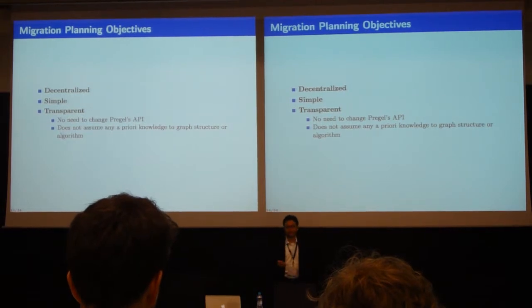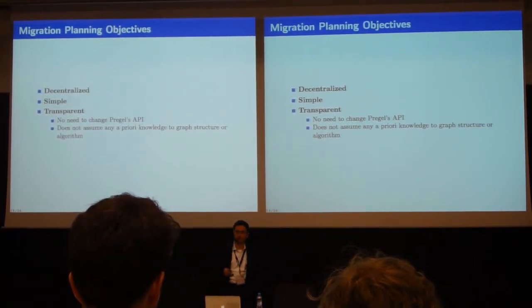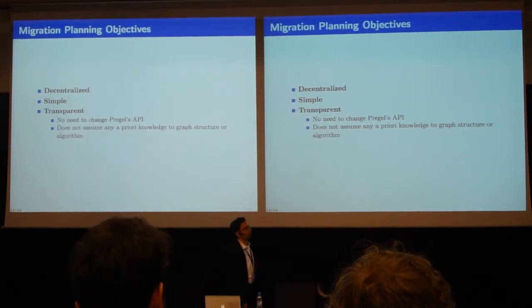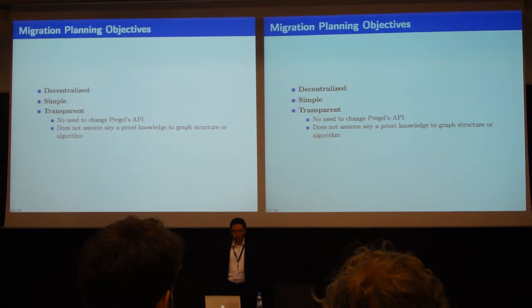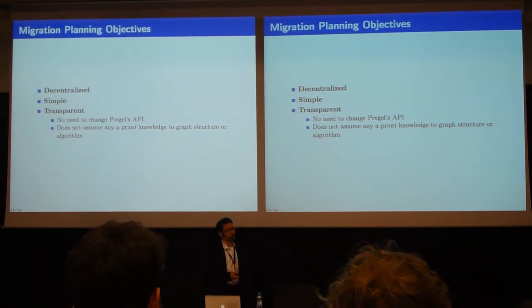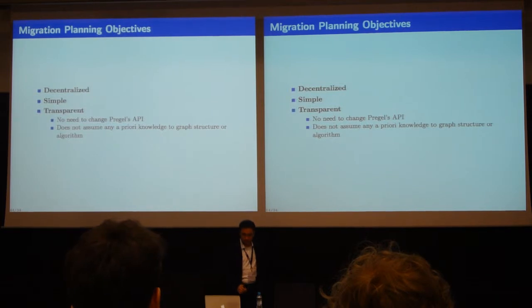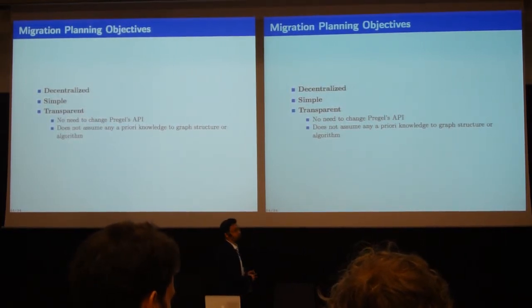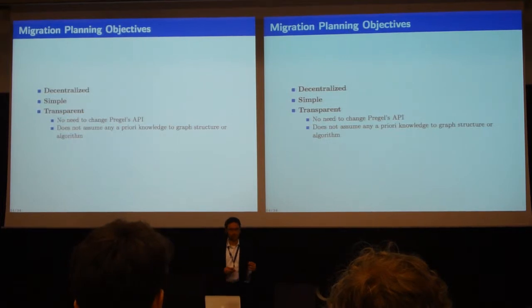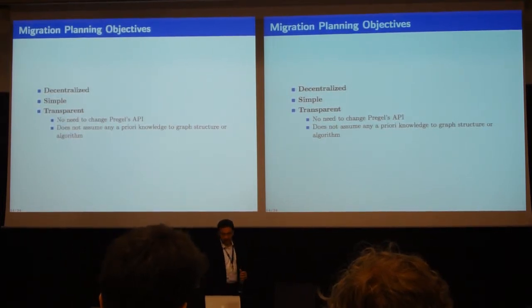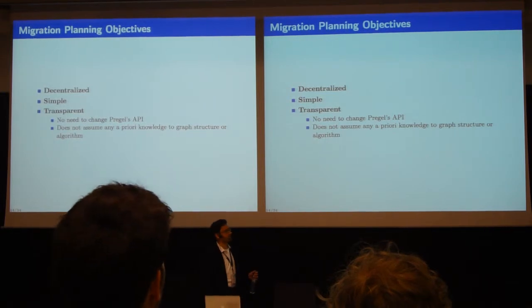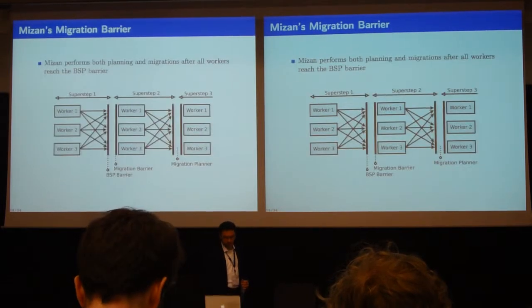Mizan is bulk-synchronous parallel. We'll show how we optimize for runtime. When we looked into graph behavior and wanted to do runtime optimizations, we wanted our migration planner to be decentralized — we don't want hidden synchronizations between workers. We wanted it to be simple and transparent — we don't want to change the Pregel API or require the user to be aware of migrations and change their code. It does not assume any prior knowledge of the graph structure or algorithm. Give us your algorithm and your graph, and we will optimize for the behavior.